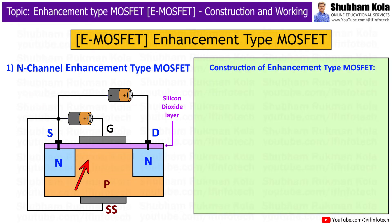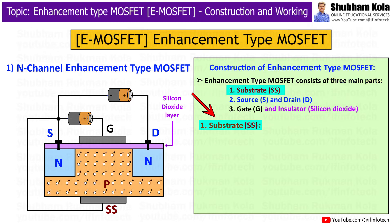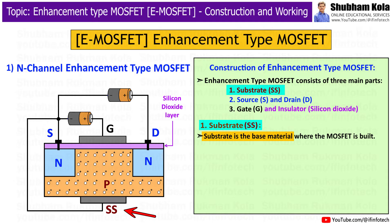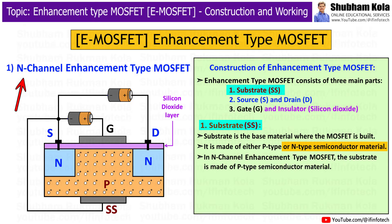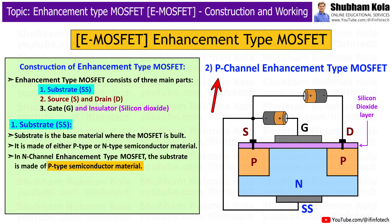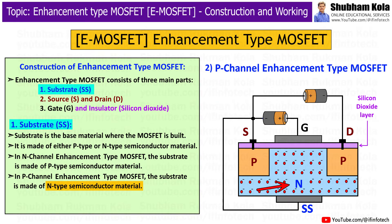Now let's talk about how the enhancement type MOSFET is constructed. To make it easy to understand, let's break it down into three main parts. First is the Substrate, which is the base material where the MOSFET is built. It is made of either P-type or N-type semiconductor material. In an N-channel enhancement type MOSFET, the substrate is made of P-type semiconductor material, whereas in a P-channel enhancement type MOSFET, the substrate is made of N-type semiconductor material.